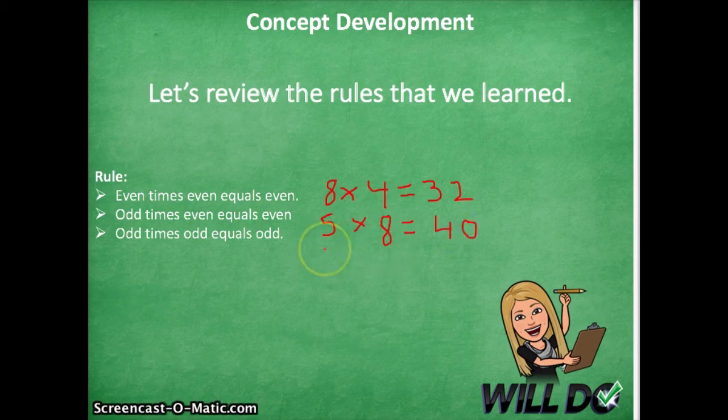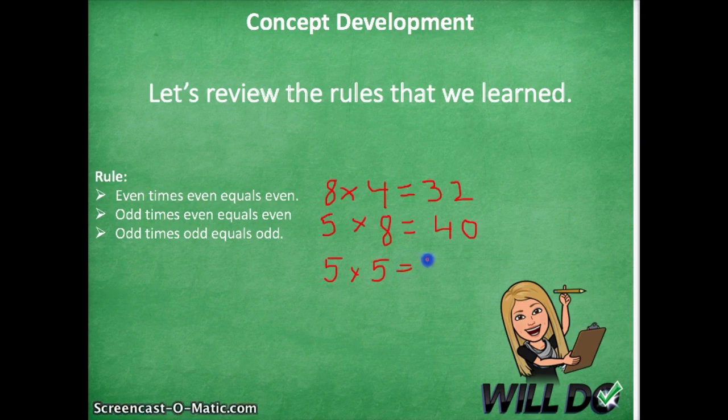And two odd numbers like five times five equals an odd product, twenty-five.